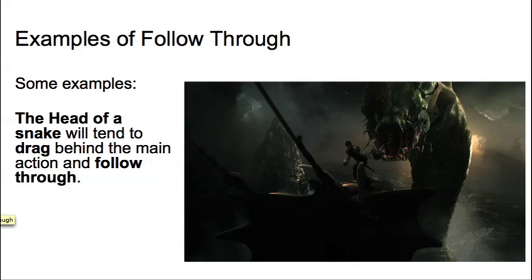Here's another piece of work that I did on the Chronicles of Narnia, The Voyage of the Dawn Treader. This is an enormous sea serpent in which the main motion of the sea serpent came from its body here, its kind of middle section, and the head of the snake tended to drag behind it and overlap the main action and follow through. In addition, it had all these tentacles, which also tended to drag behind the sea serpent and then overlap or follow through the main action.